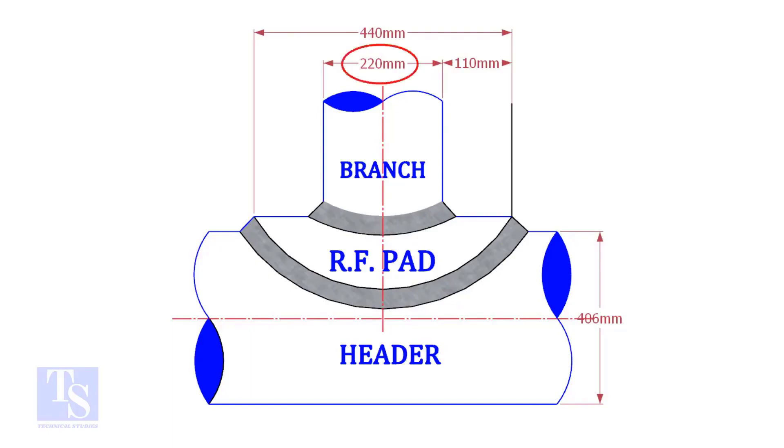The OD of our branch pipe is 220 mm, so the outer diameter of our RF pad is 440 mm.